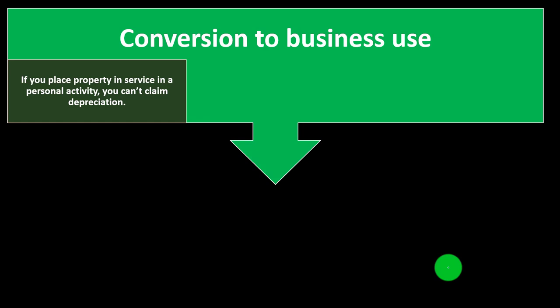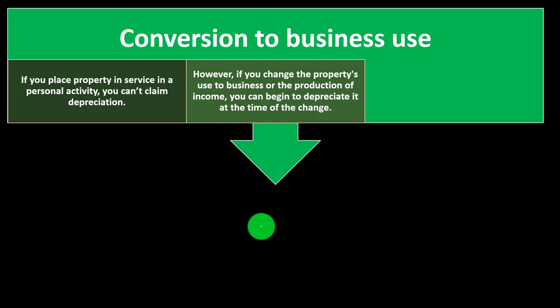Conversion to business use: if you place property in service in a personal activity, you can't claim depreciation. So if it's your lake house and you're not renting it — it's not for business use — you don't depreciate it. You don't depreciate your home because it's your home. You do get to deduct mortgage interest and property taxes, which is unusual since it doesn't follow the normal rule of expensing things used to generate revenue.